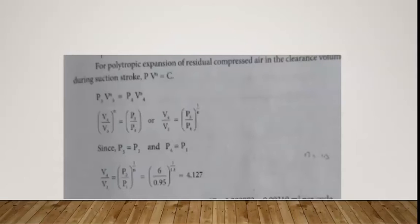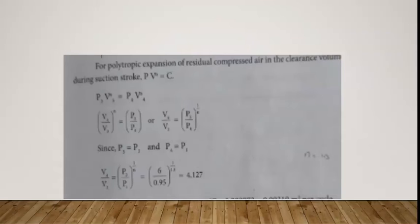For the expansion process from 3 to 4, we apply P3 × V3^N equals P4 × V4^N. Rearranging: V4 divided by V3, raised to N, equals P3 divided by P4. Therefore V4 equals V3 × (P3/P4)^(1/N). Also, using P2/P1 equals P3/P4, V4 equals V3 × (P2/P1)^(1/N).